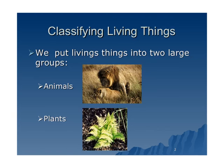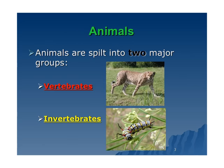As was said in the last presentation, when we classify living things, we put living things into two large groups: animals and plants. We then take the animals and split those into two major groups — the vertebrates, which you learned about in the last presentation, and the invertebrates. Remember, when you put 'in' in front of a word, it means 'not.' So vertebrate meant backbone, so invertebrate is going to mean no backbone.